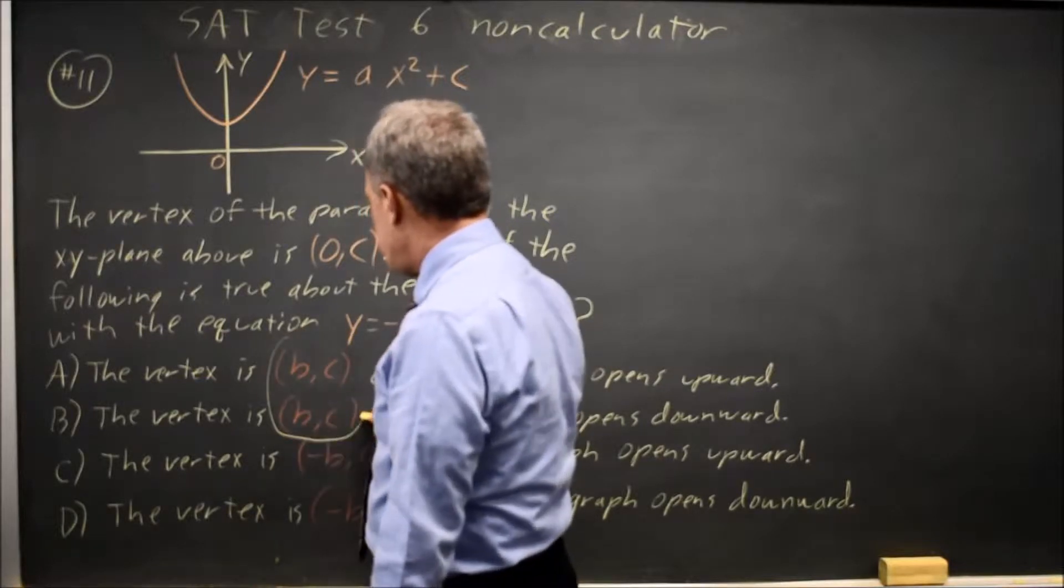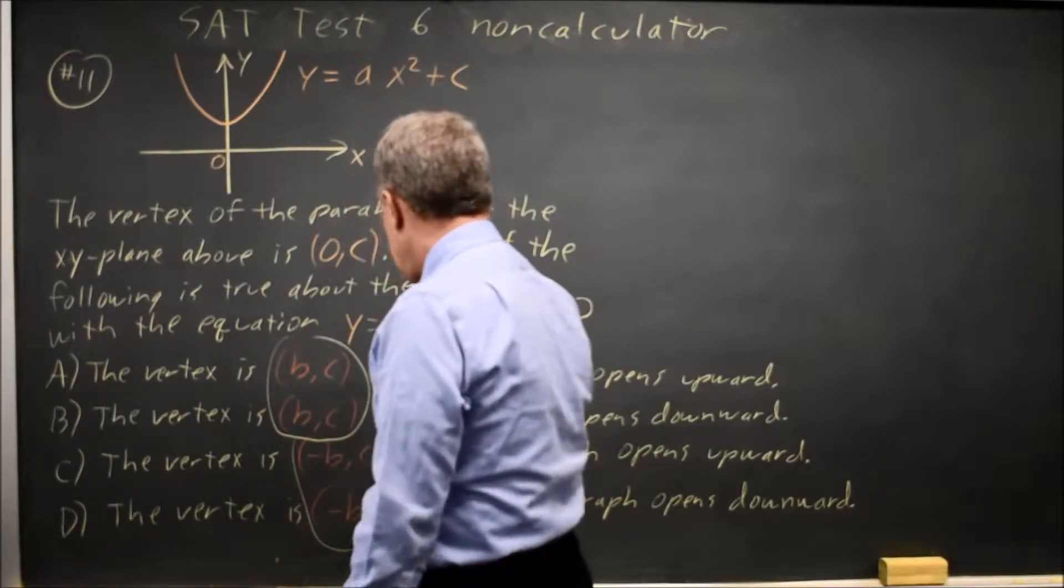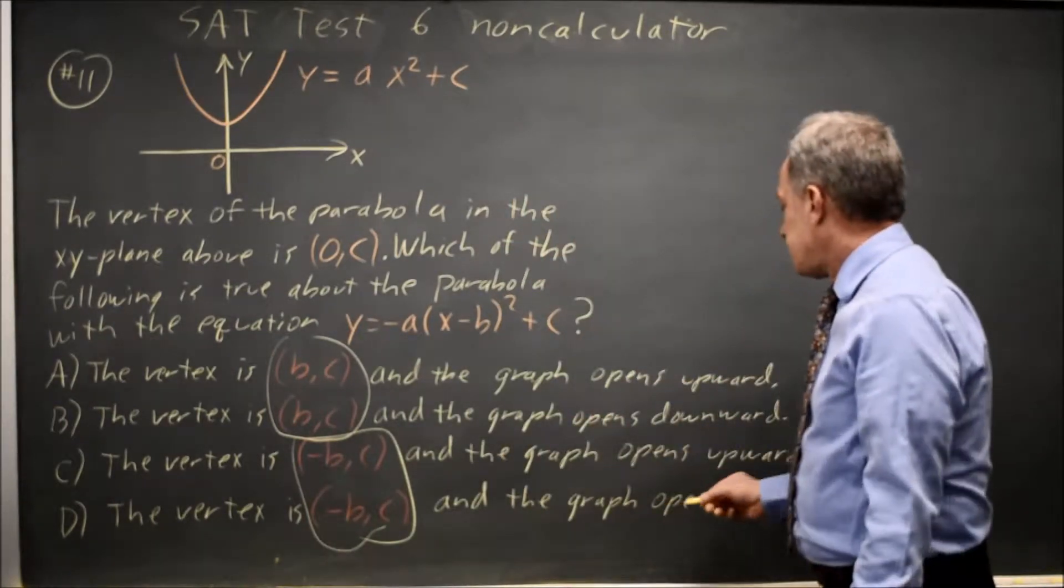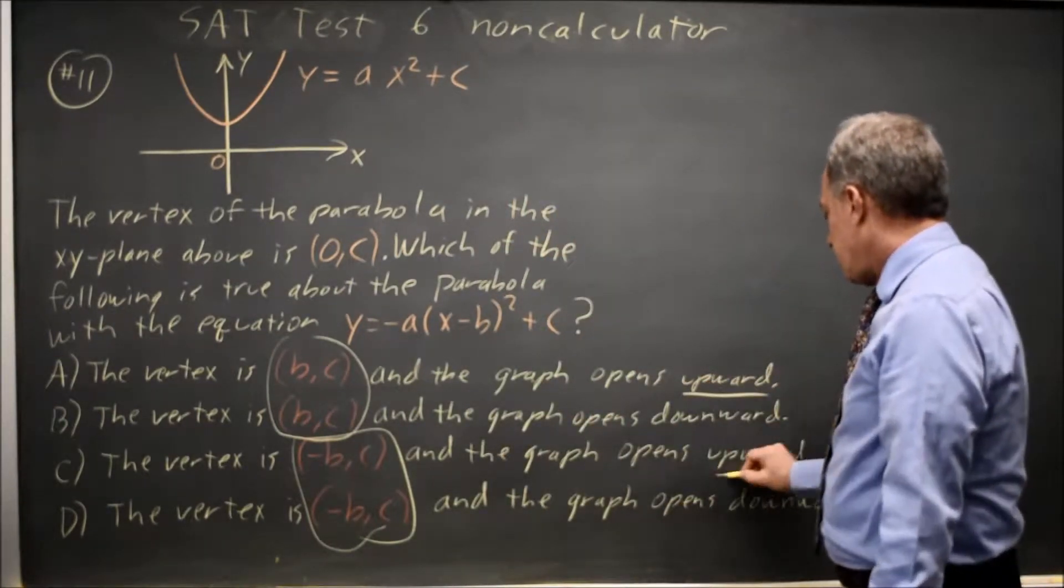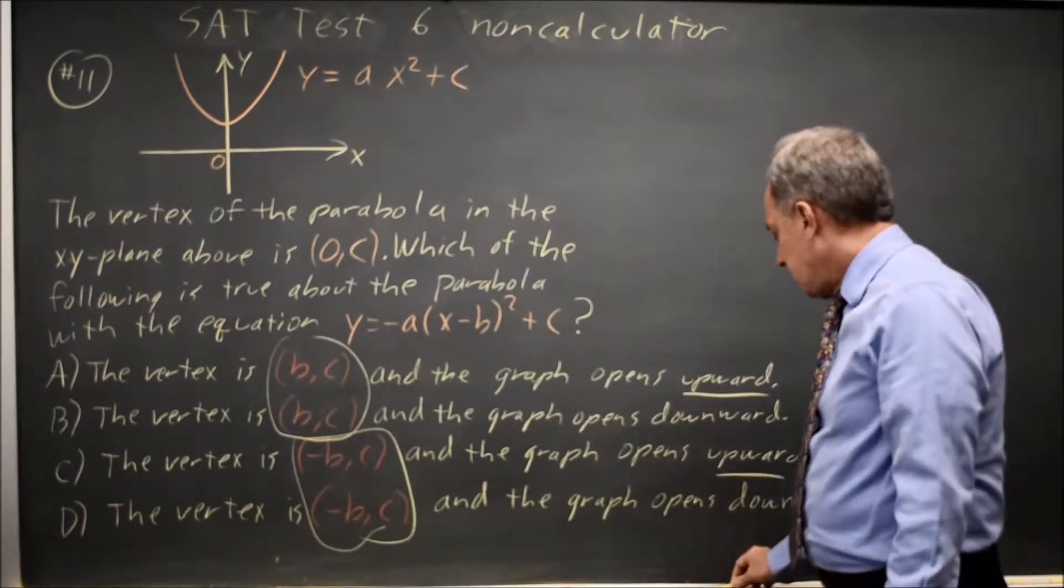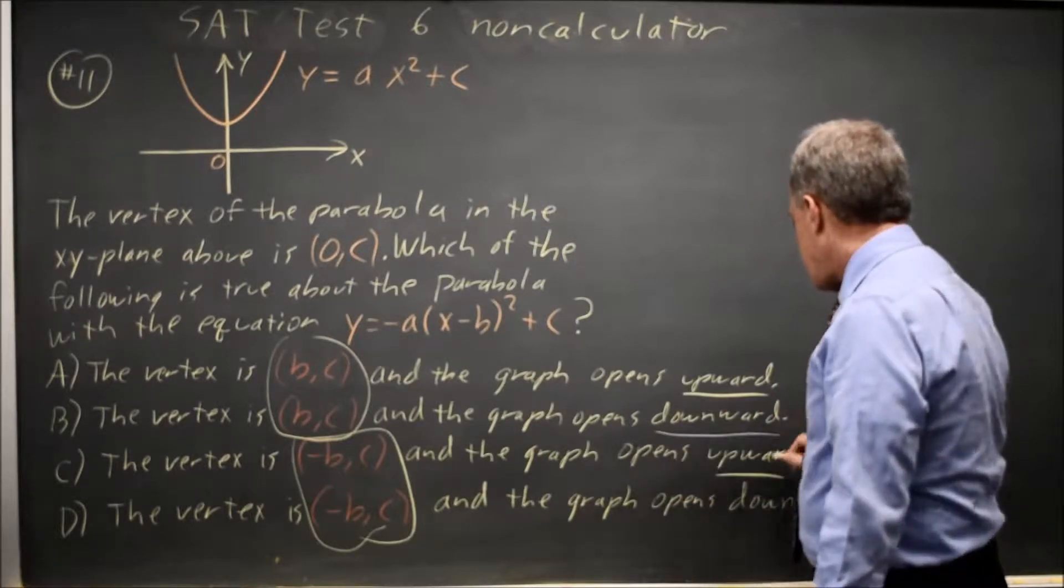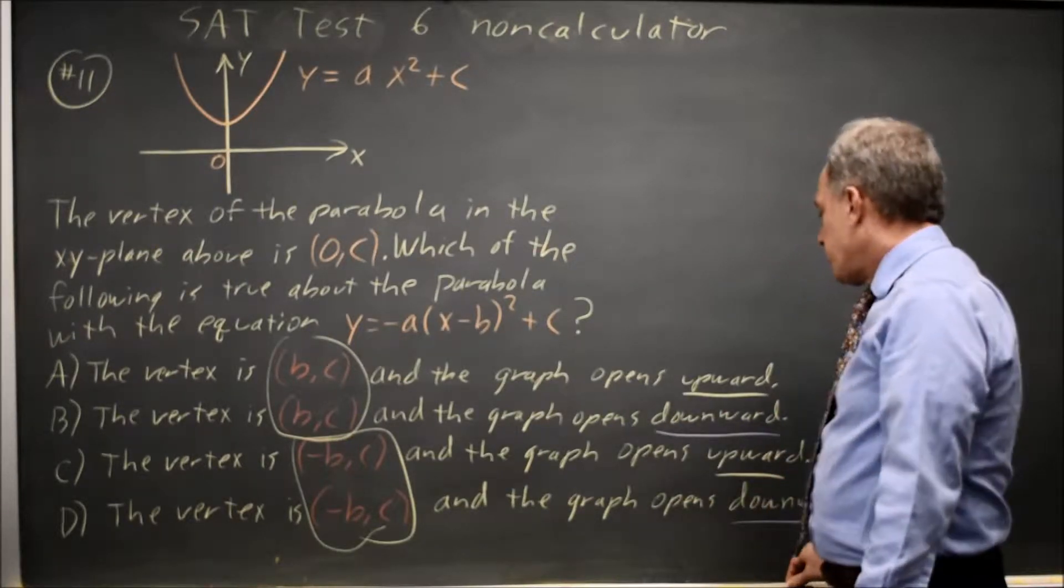is the vertex (b, c) or (negative b, c)? And then choices a and c are opening upward, and b and d are opening downward. So they're asking, does this open upward or downward?